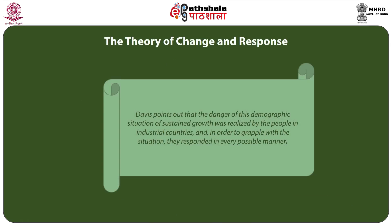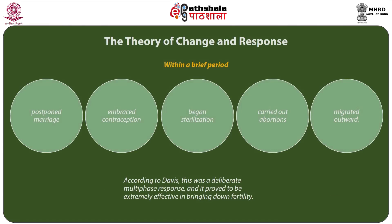Davis points out that the danger of this demographic situation of sustained growth was realized by the people in industrial countries, and in order to grapple with the situation they responded in every possible manner. Within a brief period they quickly postponed marriage, embraced contraception, began sterilization, carried out abortions, and migrated outward. According to Davis, this was a deliberate multiphase response and it proved to be extremely effective in bringing down fertility.